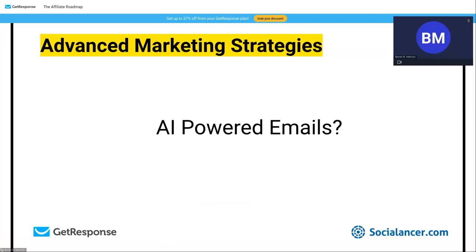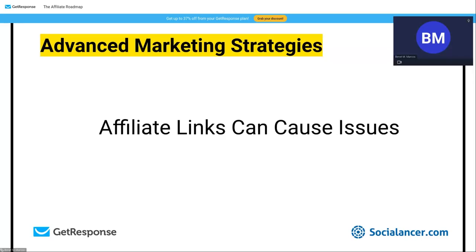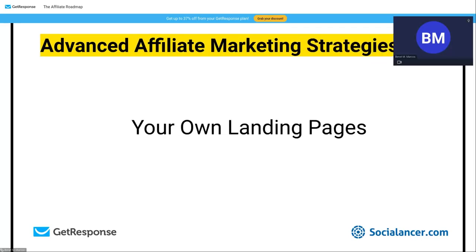We use AI only to get ideas — the important thing is to be yourself. People need to feel it's genuinely you. In the bonus masterclass, we'll show how to create AI lead magnets to attract people. Be careful with affiliate links — some email marketing softwares won't allow them. The solution is to create your own landing pages: you send people to your domain and maintain control. We sometimes translate a vendor's page into Spanish and add our own videos.